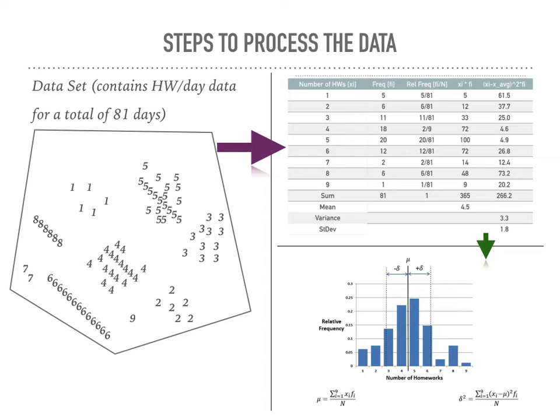The first column is number of homework - that's basically an event that happens. The second column is frequency - how many times the event to the left happens. Like, say I got one homework, that would be in the one group. Relative frequency is the fraction form of the frequency.